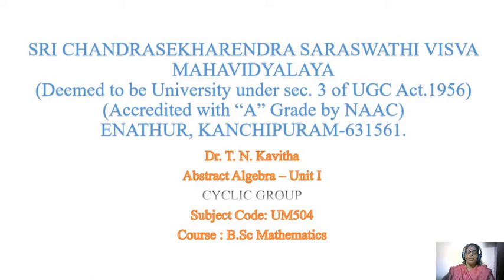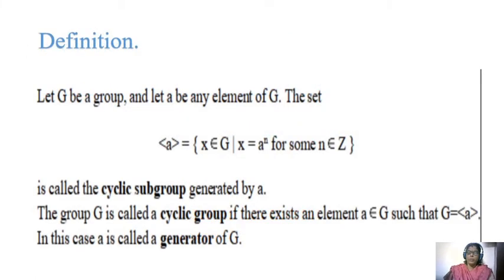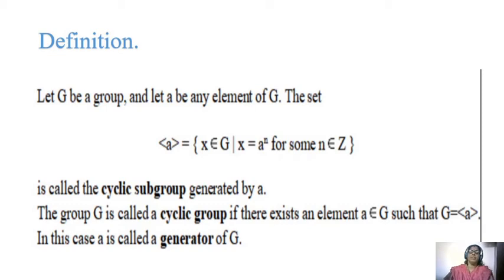Hi everyone, today we are going to see cyclic group in abstract algebra. This is a common UG syllabus. The definition for cyclic group: let G be a group and let A be any element of G. The set generated by A equals the set of X belonging to G such that X equals A power N for some N belonging to Z. It is called a cyclic group of generator A.